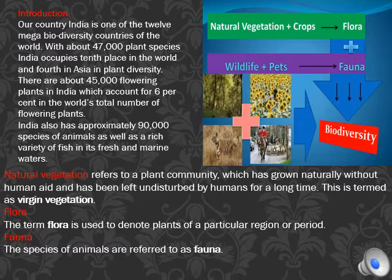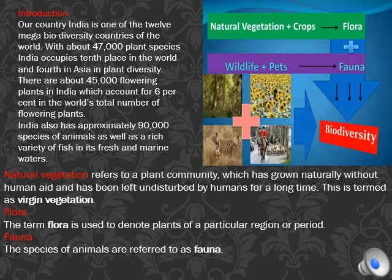Natural vegetation refers to the plants which grow naturally without any human intervention, and if it is left undisturbed by humans for a long time, it is called virgin vegetation.